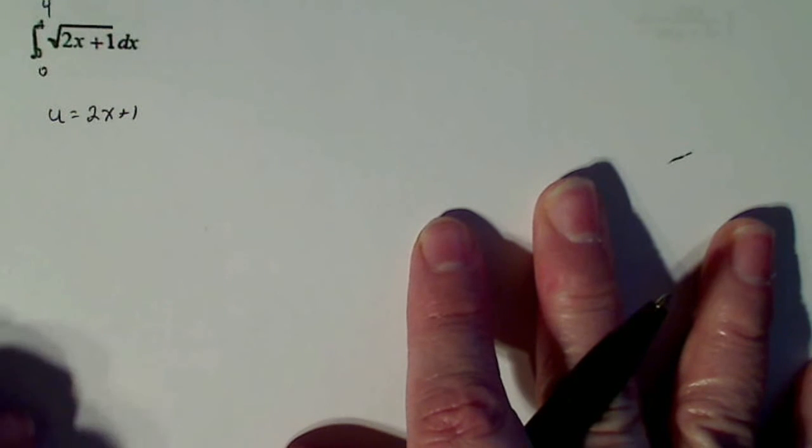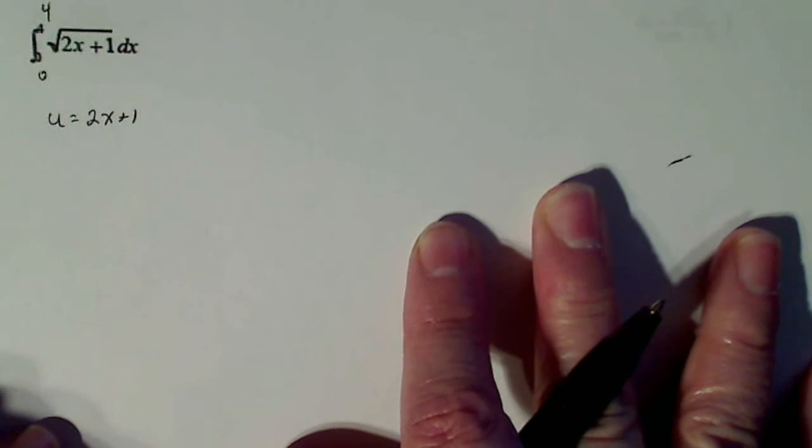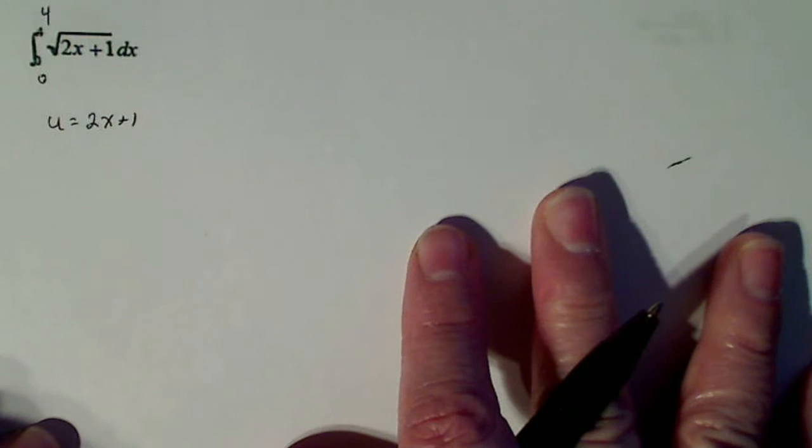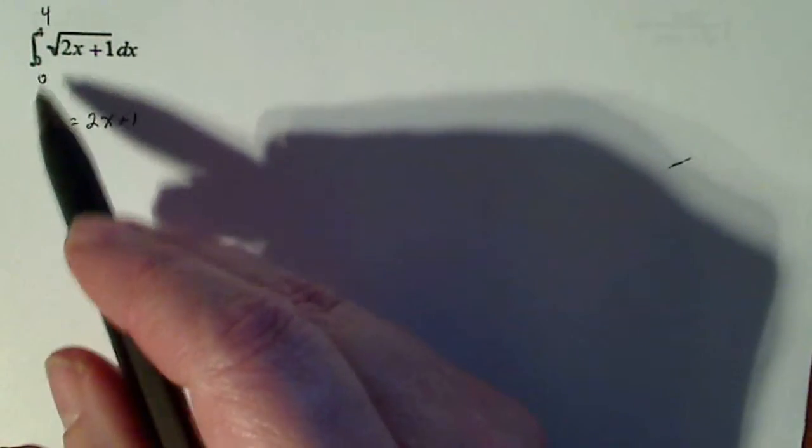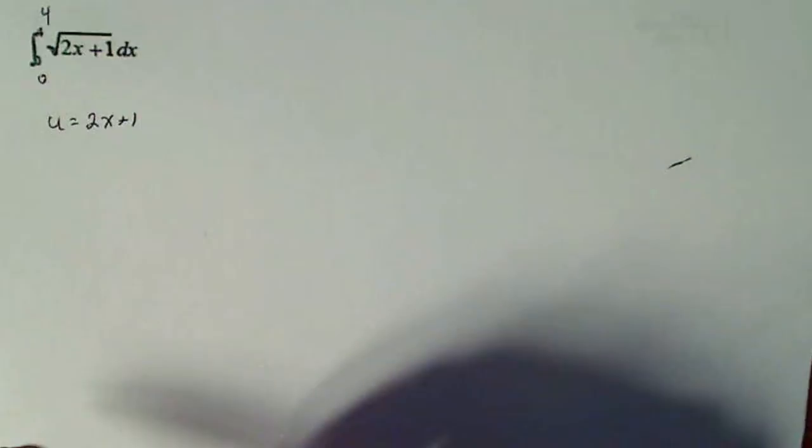I know I can't use the simple method such as just the plain old power rule and the derivative sine is cosine and all that kind of stuff. That doesn't work because of the radical, so I'm going to try the next best thing.